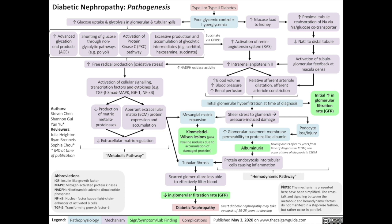At the cellular level in the kidney, more glucose in the bloodstream means increased glucose uptake and glycolysis by glomerular and tubular cells. This results in a complex series of mechanisms involving increased advanced glycation end products, shunting of glucose through non-glycolytic pathways, activation of the protein kinase C pathway, and excessive production and accumulation of glycolytic intermediates such as sorbitol, hexosamine, and succinate.